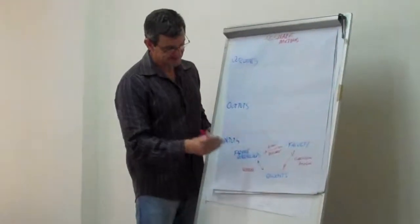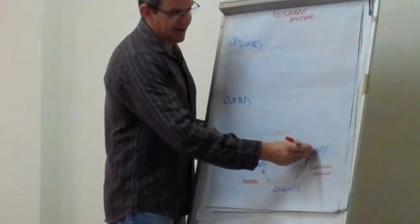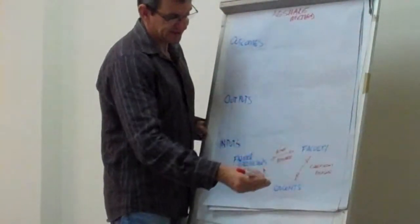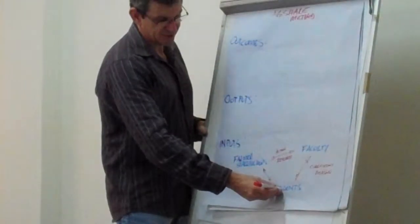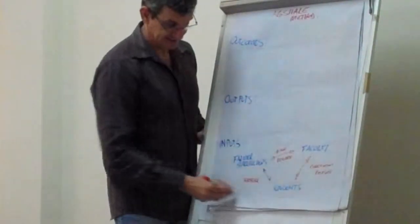These are the players, basically the farmer stakeholders, the faculty at the university, and then the students who are doing the research. So the idea, these are the three players in the method.